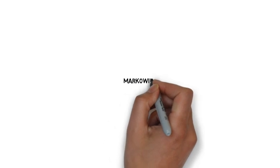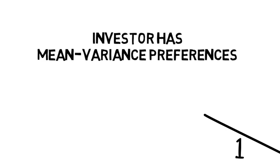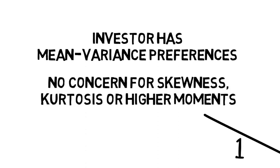This video summarizes the learning points for our case study on mean variance portfolio allocation. Learning point 1: A Markowitz investor has mean variance preferences. That means the investor extracts happiness from holding a portfolio that pays high returns on average with little variation. A mean variance investor is not concerned about skewness, kurtosis, or any other higher moment of his return distribution.